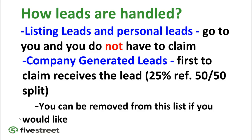There are two different types of leads you might be receiving. There are listing leads and personal leads — those go directly to you and you do not have to claim them. They don't go to any other agents, same as it's always been, but now they'll go through Five Street and the client will be contacted right away.